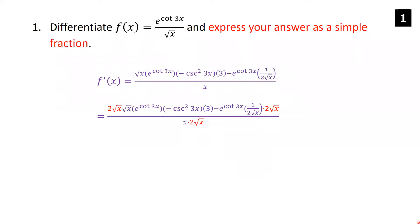Now I'm going to multiply the top and the bottom of this fraction by 2 root x. The reason is that we have a complex fraction — a fraction within a fraction — so we have to get rid of this 2 root x. I'm distributing the 2 root x to both terms on top, and of course multiplying the bottom by 2 root x as well.